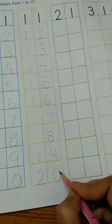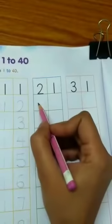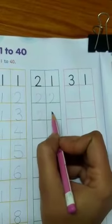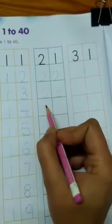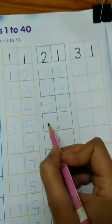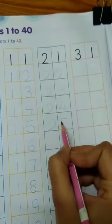What comes after 19? 2, 0, 20. 2, 1, 21 is written. So you have to write 2, 2, 22. 2, 3, 23. 2, 4, 24. 2, 5, 25.